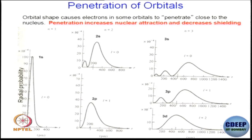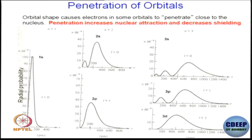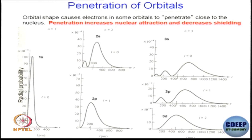The probability of finding the 1s electron towards the nucleus is quite high. If you look at the 2s electron, the probability of finding the 2s electron at the nucleus is not that much. There is a node at a certain distance, after which the probability of finding the 2s electron is quite high. For the 3s electron, one more node is added. Comparing 2s versus 2p, 2s has some component very close to the nucleus, while 2p does not have much component very close to the nucleus.